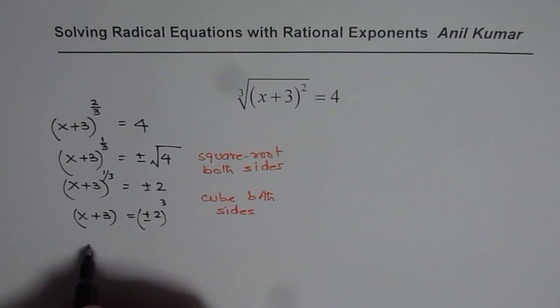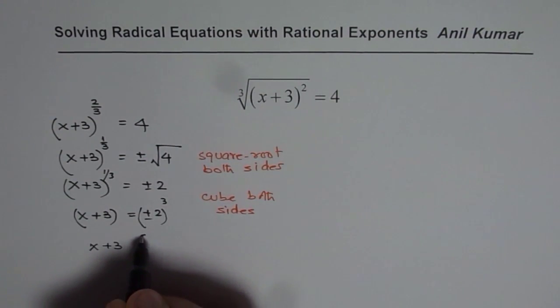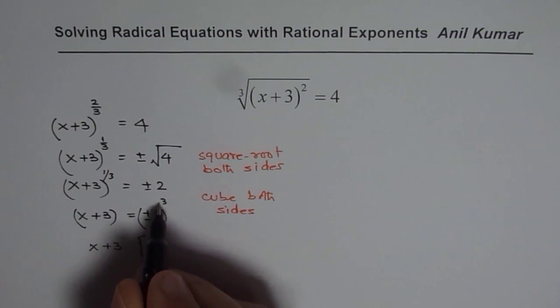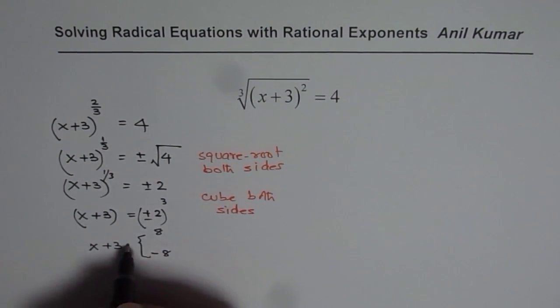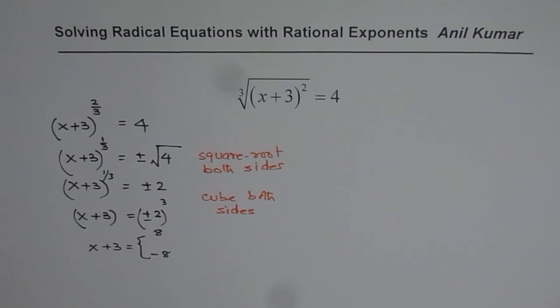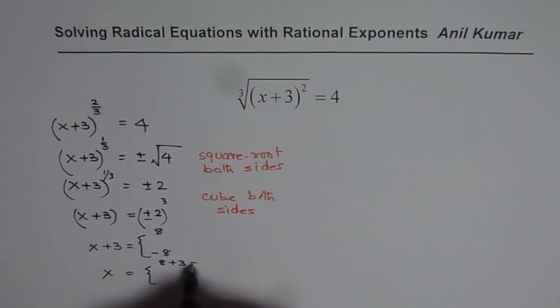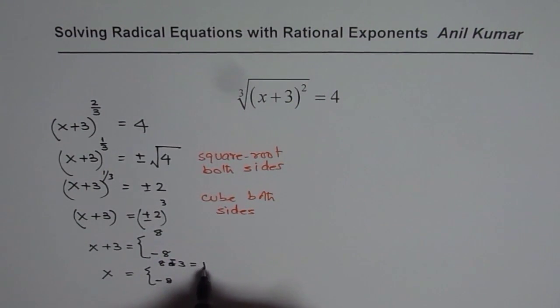So that gives us two possible solutions. x plus 3 is either equal to plus 2 cube, which is 8, or minus 2 cube, which is minus 8. So from the first one, you get x equals to 8 minus 3, which is 5. Or you get minus 8 minus 3, which is minus 11.